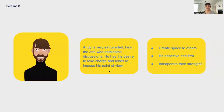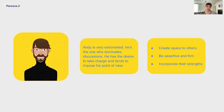Let's go to our second persona — Andy. Andy is the opposite of Annie. He is super extroverted, he is the one who dominates the discussions. He has a desire to take charge and tends to impose his point of view. This could be someone in your engineering team, a fellow PM, or a stakeholder. A very confident and loud personality may come across as the most persuasive, but there are other opinions in the room too. They could make less assertive people feel uncomfortable sharing their opinions, which would result in the loss of potentially good ideas.